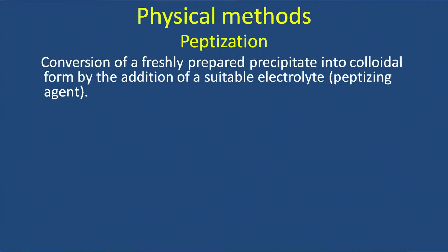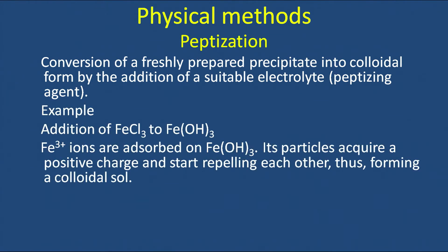Another physical method is peptization — the conversion of a freshly prepared precipitate into colloidal form by addition of a suitable electrolyte called the peptizing agent. For example, adding ferric chloride to freshly prepared ferric hydroxide precipitate causes ferric ions to be preferentially adsorbed on the surface of ferric hydroxide. The particles acquire a positive charge, repel each other, and form a stable colloidal sol, unable to aggregate into larger particles.